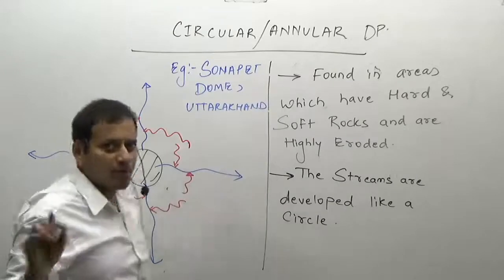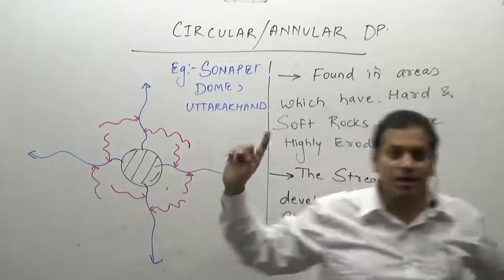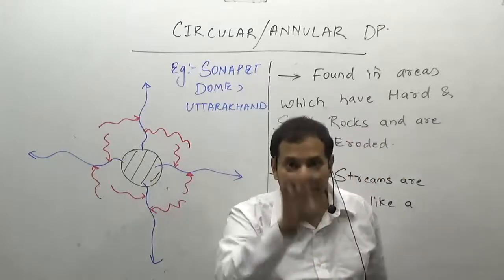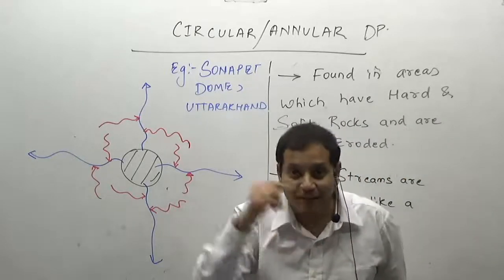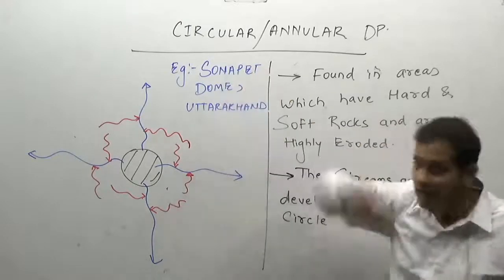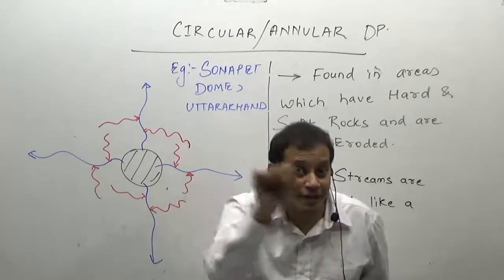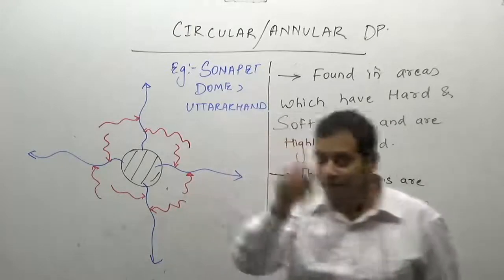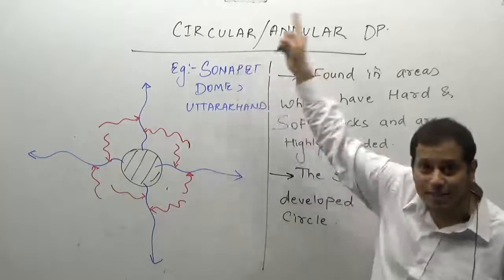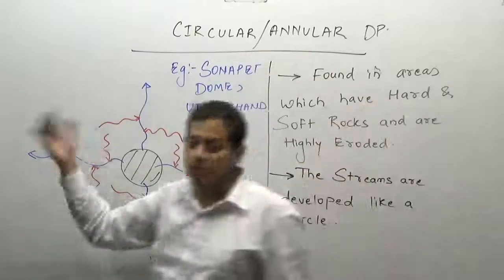The example is not that important to remember, but if a question comes about the drainage pattern which develops in areas having a dome-like structure that is highly eroded, the answer is circular drainage pattern. You should also know its other name — annular drainage pattern. Example is Sonapet dome.